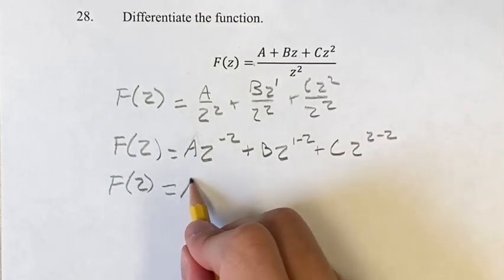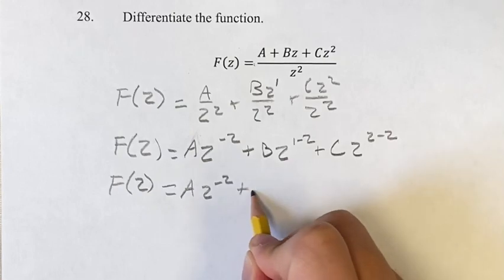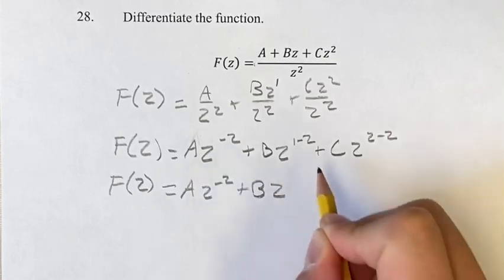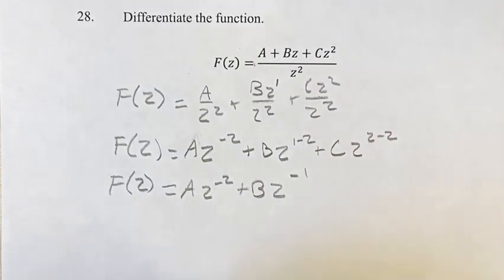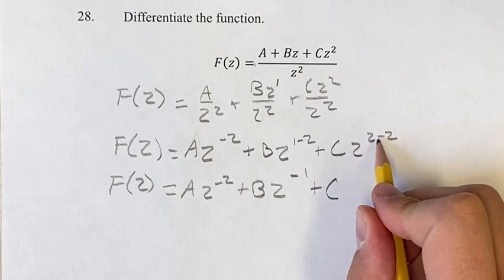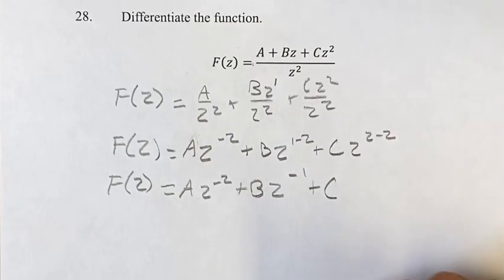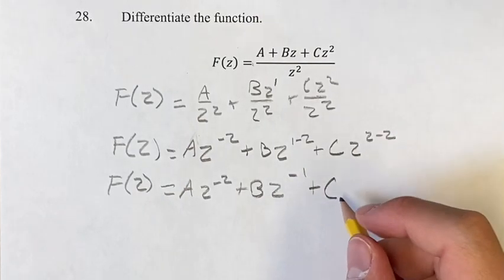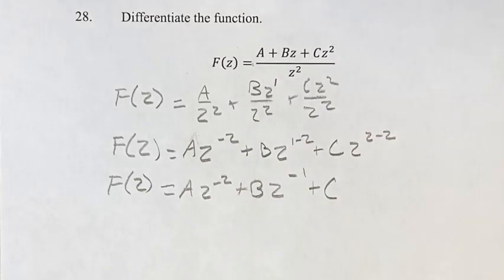So we have f of z equals a times z to the negative 2, plus b times z to the negative 1 (since 1 minus 2 is negative 1), plus c times z to the 0. Since anything to the 0 is just 1, that last term is simply c.